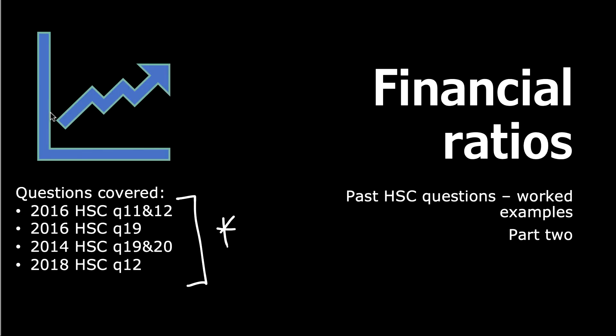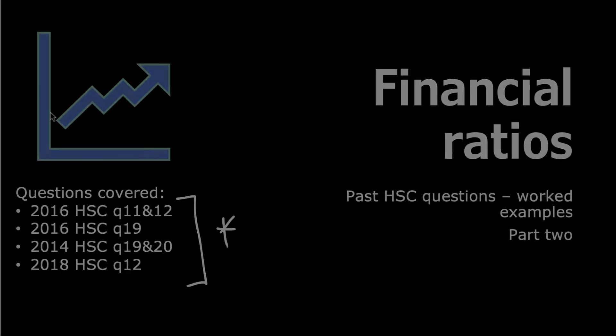So this was the second part of the financial ratios worked examples. If you have any questions or things you want to clarify, just put them in the comments and I will see you in the next one.